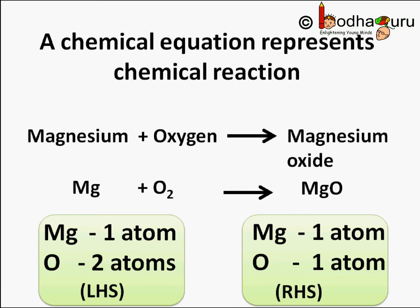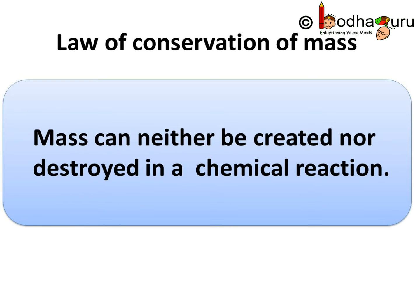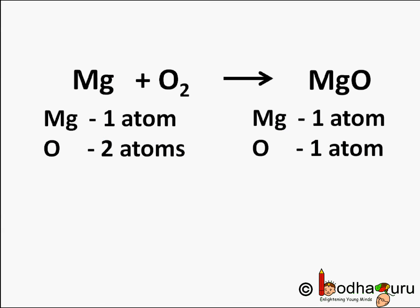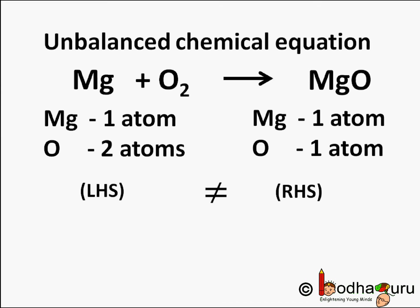According to the law of conservation of mass, mass can neither be created nor destroyed in a chemical reaction. This means the total mass of elements present in the products should be equal to the total mass of the elements present in the reactants. In simple words, the number of atoms of each element remains the same before and after the reaction. A chemical equation where the total number of atoms of each element are not the same on both sides is called an unbalanced chemical equation or skeletal chemical equation. So Mg + O2 → MgO is a skeletal or unbalanced chemical equation for the burning of magnesium in air.